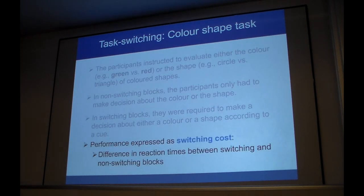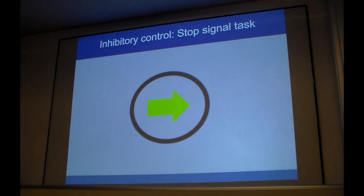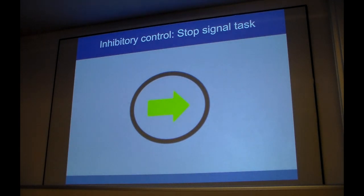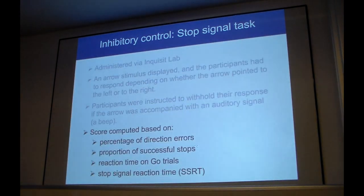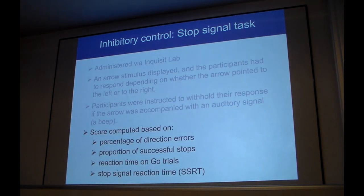For inhibitory control, this was also administered by Inquisit Lab. An arrow appeared on the screen and participants had to decide whether it was directed towards the left or towards the right. But this was not the only thing they had to do, because sometimes there was an auditory signal like beep, and if they heard this, then they were not supposed to react. So like this: beep, you're not supposed to click. And then it's right, and then there should have come a beep, and then you're not supposed to react. So you have to inhibit yourself. The score was computed based on the percentage of direction errors, also the proportion of successful stops, and we had reaction times for go trials and also for stop signal reaction times.